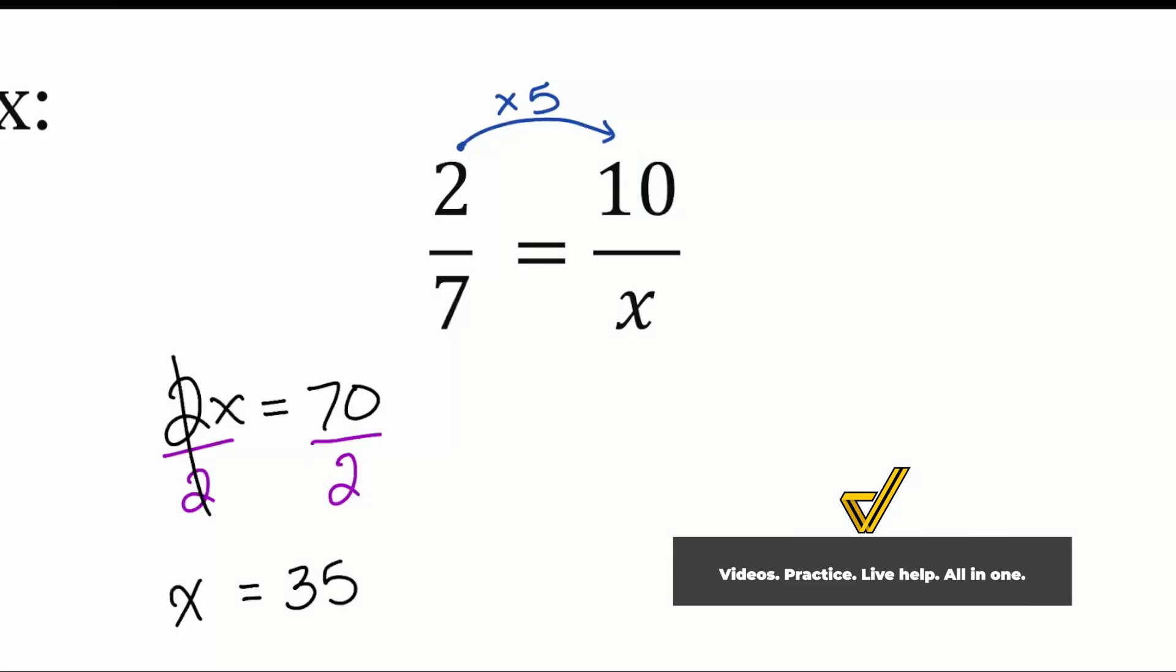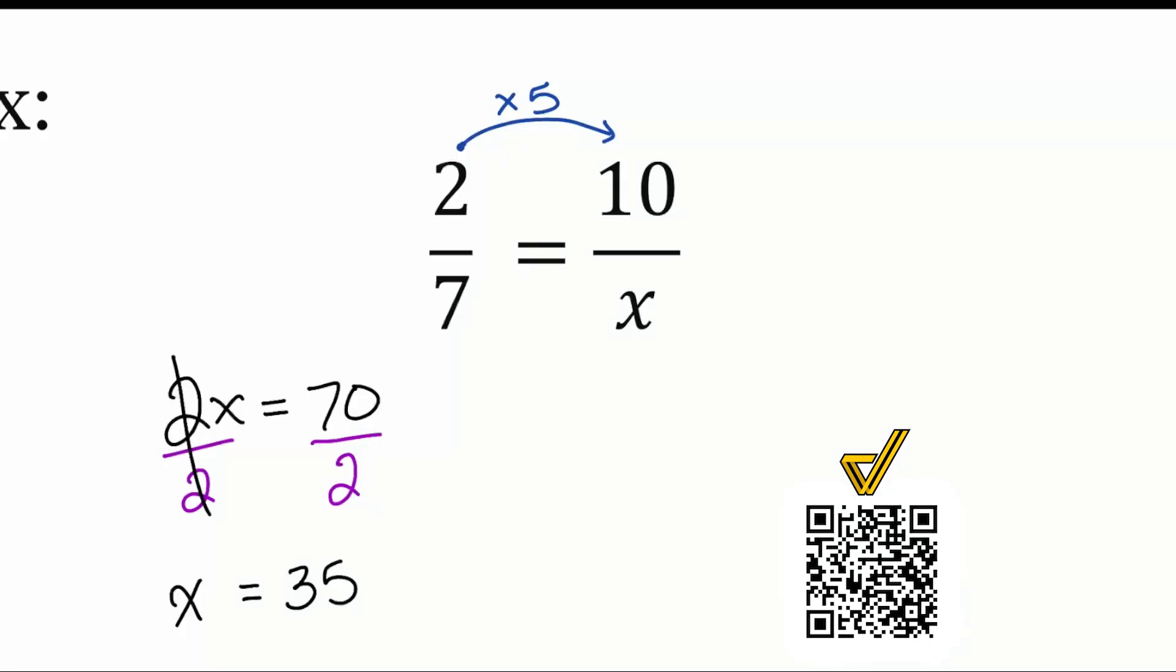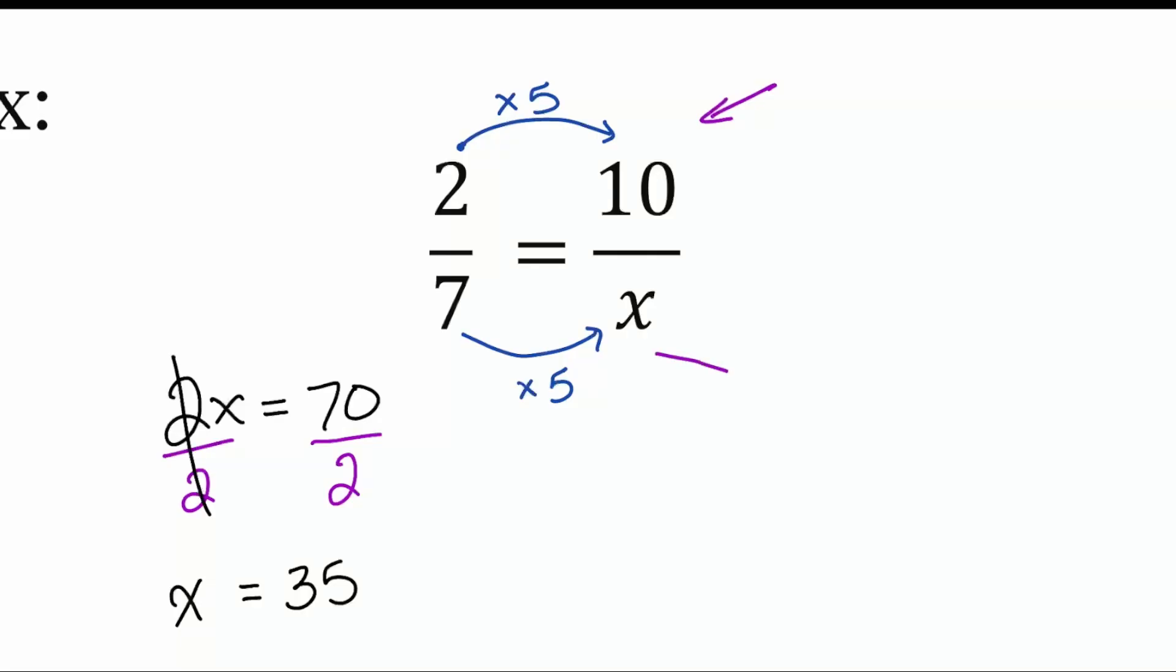So what does this mean? This means that if I'm going to go times 5 from left to right on the top, it is going to be times 5 left to right on the bottom. So let me go ahead and actually point this out right here, right there, and right there.